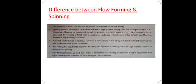A pivot pointer is used in spinning, whereas in flow forming, rollers with automated control movements are used to form the blank against the mandrel. Flow forming has significantly improved flexibility and accuracy in forming parts with large thickness variations compared to spinning. Flow forming machines are much more robust in construction than spinning machines and therefore can generate much higher forces required to extrude the metal through its entire thickness.